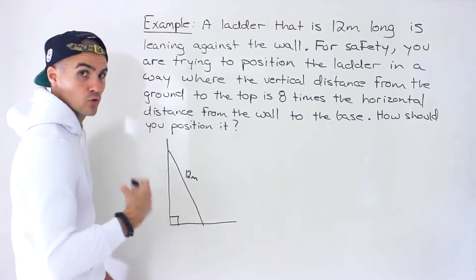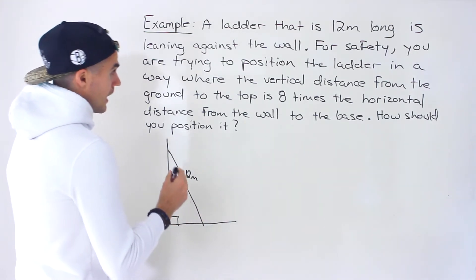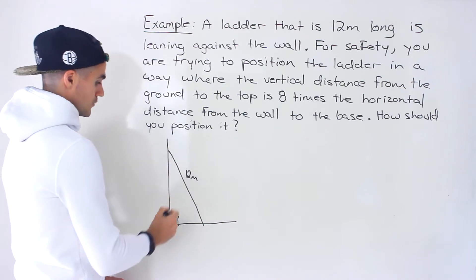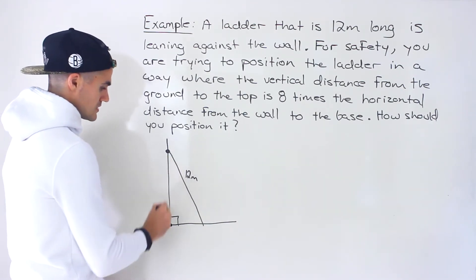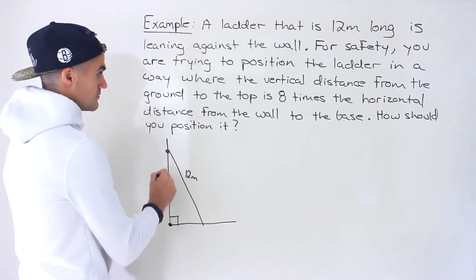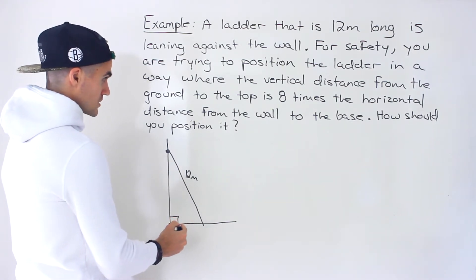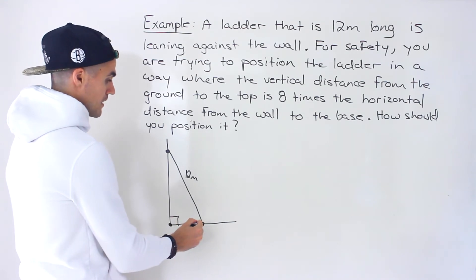Notice we're dealing with a right angle triangle in this case. The vertical distance from the ground to the top of the ladder has to be eight times the horizontal distance from the wall to the base of the ladder.